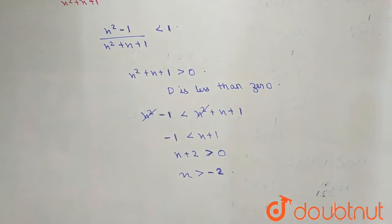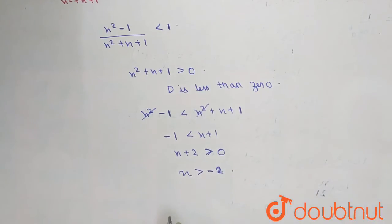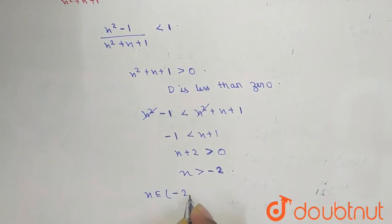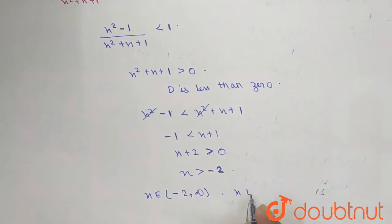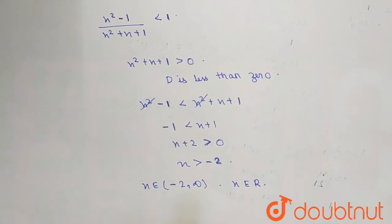So their limits will be from minus 2 to infinite. So from here, what we will say that X is an element of minus 2 to infinite, where all X belongs to real number. So this will be the resulting answer.